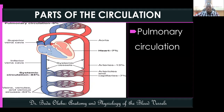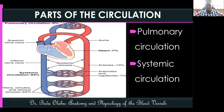The systemic circulation delivers oxygen to the various body organs — it is primarily for delivery of oxygen, as well as nutrients.